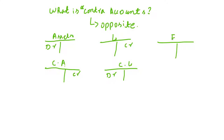In equity, the normal balance is credit, but a contra equity account balance is debit. So we understand that for any type of account, the opposite balance of the account is called a contra account. The asset's opposite balance is credit, liability's opposite balance is debit, and equity's opposite balance is debit.